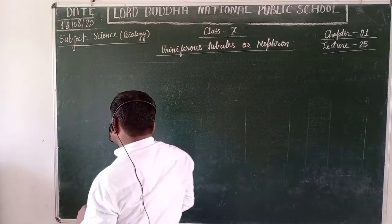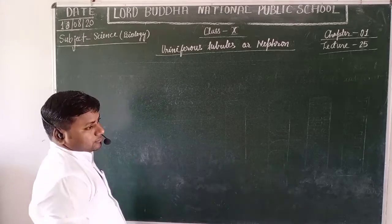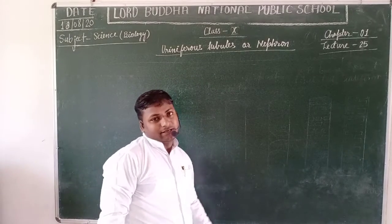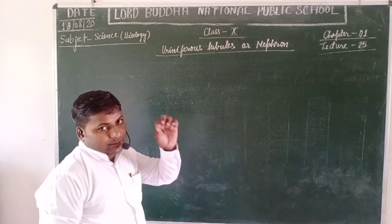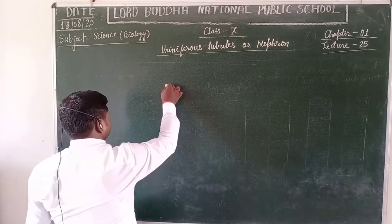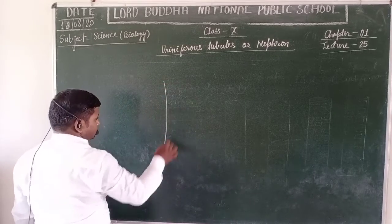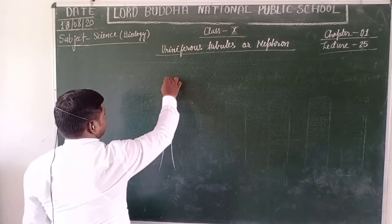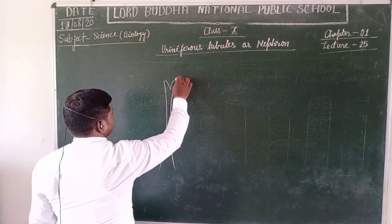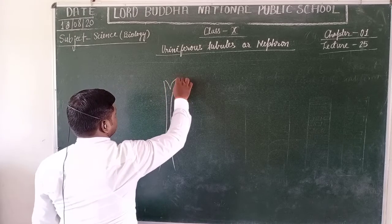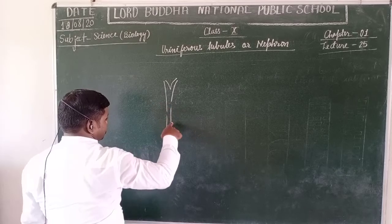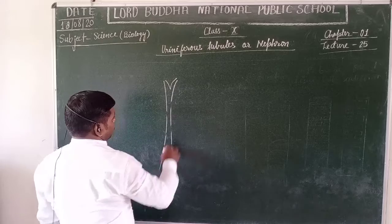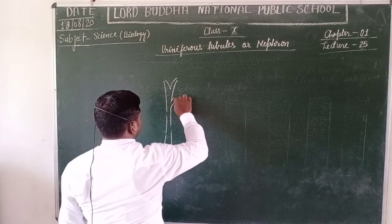There are about more than one million uriniferous tubules and nephrons forming each kidney of the human. The nephrons are just like branched structures which arise from a primary duct that is called the collecting duct.